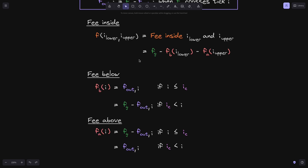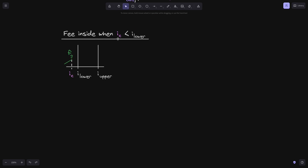Using these two equations, we want to simplify the equation for phi inside, considering three cases: when the current tick i_c is less than i_lower, when it is between i_lower and i_upper, and when it is greater than i_upper. Let's start with the case when i_c is less than i_lower. The equation for phi inside between i_lower and i_upper is f_g minus f_b(i_lower) minus f_a(i_upper).